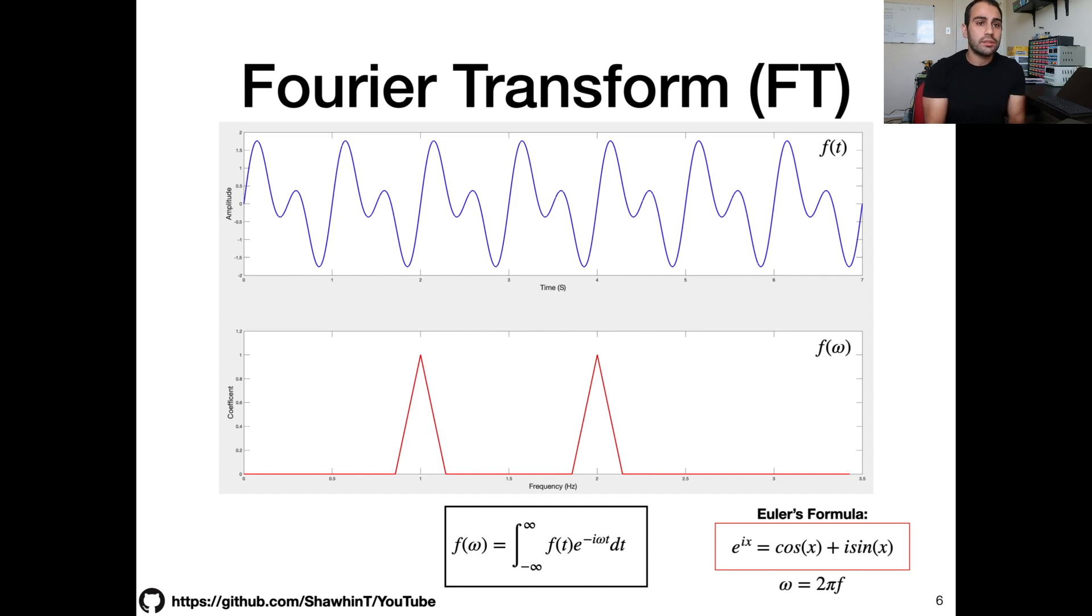So here we have the same signal, it's made up of those two simple sine waves as we saw in the previous slide. So if you were to compute the Fourier transform and plot the resulting power spectrum resulting from the Fourier transform, you get something that looks like this bottom plot. So we have two spikes at one hertz and two hertz. So this is just another way of thinking of the Fourier transform.